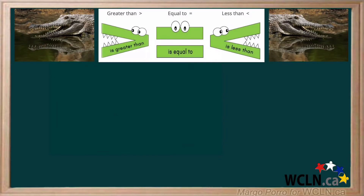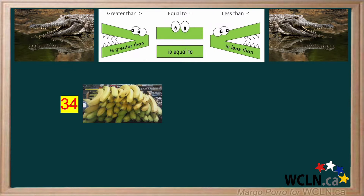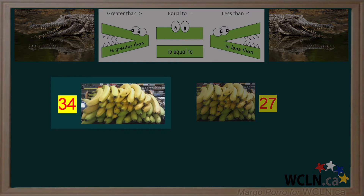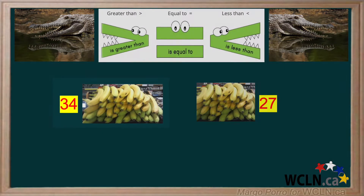Let's start with easy numbers. Say the hungry alligator — a very hungry alligator who loves bananas — can only have one pile of bananas. Which pile would he take? 34 bananas or 27 bananas? Obviously 34 is greater than 27, so he would choose the pile with 34. The alligator's mouth will always be open toward the greatest number of bananas.